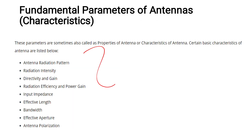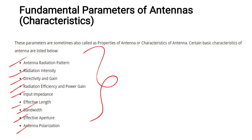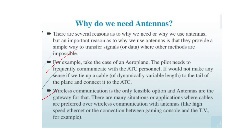We are able to communicate using the antenna parameters. The parameters are: radiation pattern, radiation intensity, directivity, radiation efficiency, power gain, input impedance, effective length, bandwidth, effective aperture, and polarization. These are the fundamental parameters.